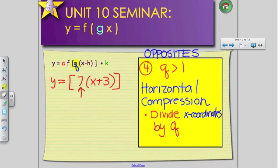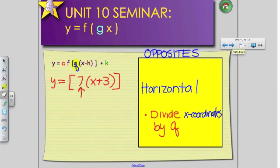For our fifth transformation, the same instruction applies. We're still going to divide our x coordinates. However, if we had 1 over 7 as our q value, so my q value is in between 0 and 1, a q value is either a fraction or a decimal. Instead of a horizontal compression, what am I going to have? What's the opposite of a compression? The stretch, or we can call it a horizontal expansion.